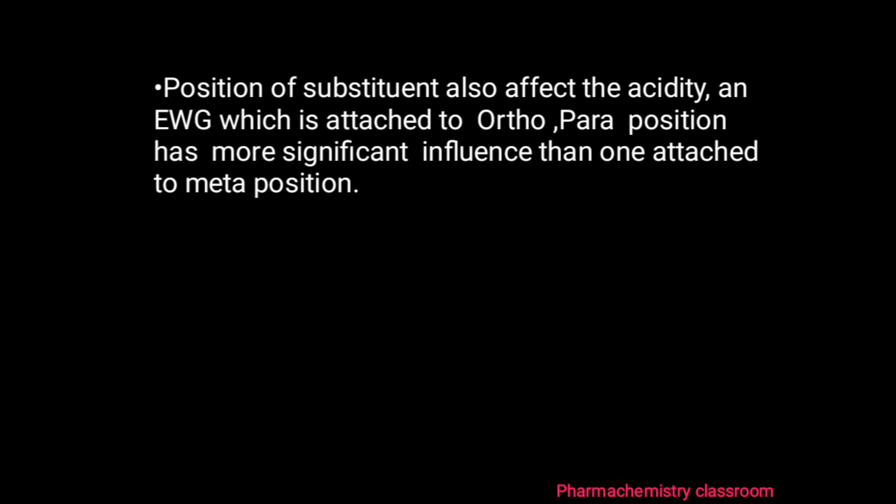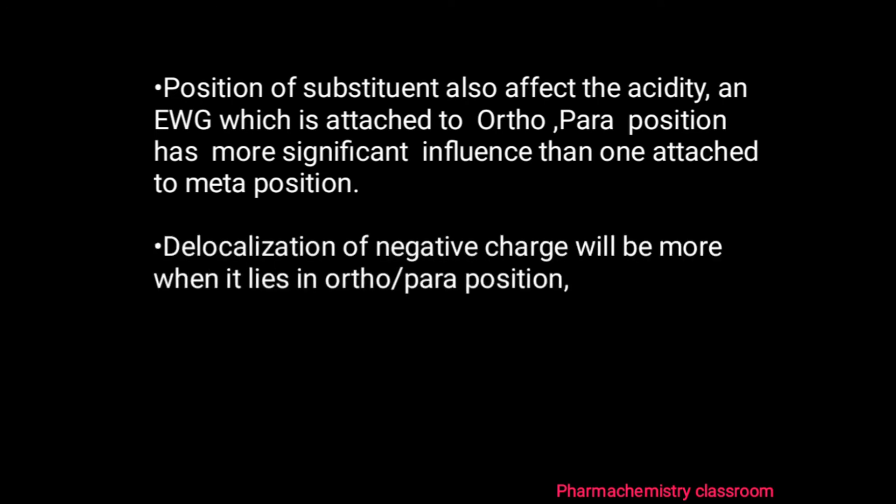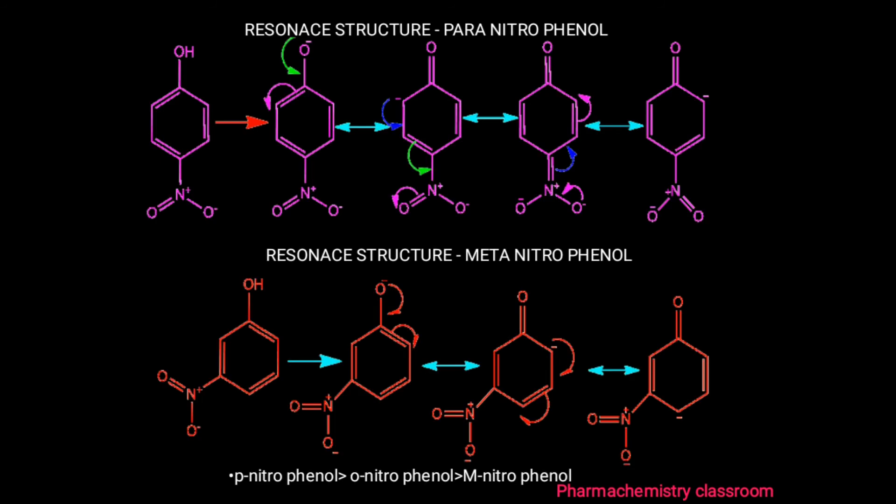The position of substituents also affects acidity. Electron-withdrawing groups attached to the ortho or para position have a more significant influence than those attached to the meta position. That is, delocalization of the negative charge will be greater when the electron-withdrawing group is at the ortho or para position, making the delocalization of charge more effective.